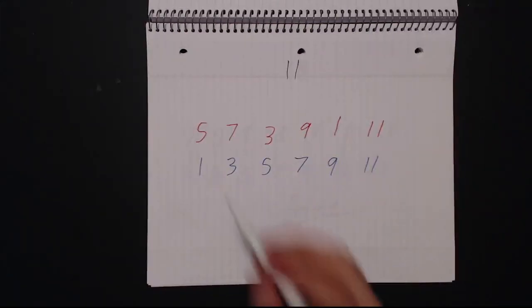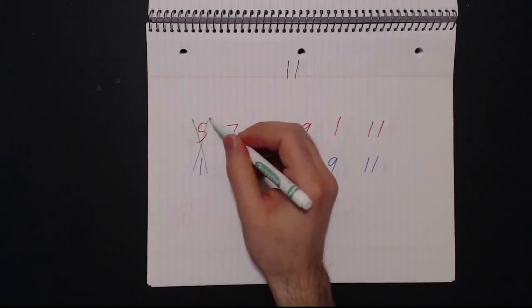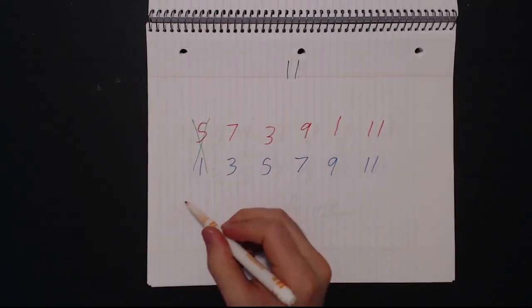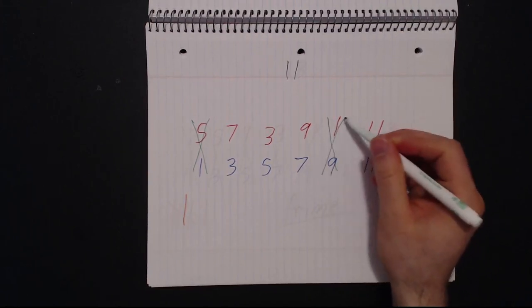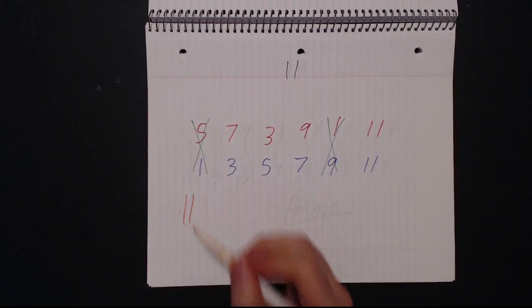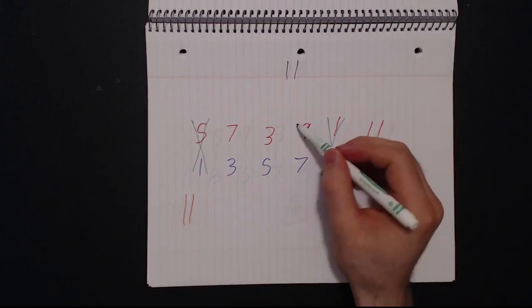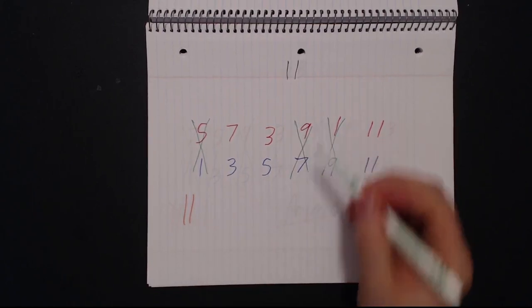Cross out the leftmost numbers and record a tick mark. Notice the lower number was 1. Go to the number 1 at the top and cross out that column. Record another tick mark. The lower number is 9. Go to the upper number 9 and cross out the column, put a tick mark.